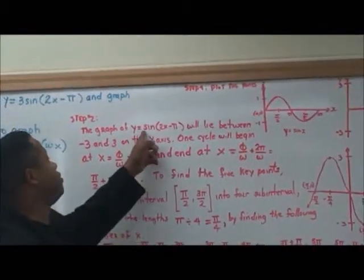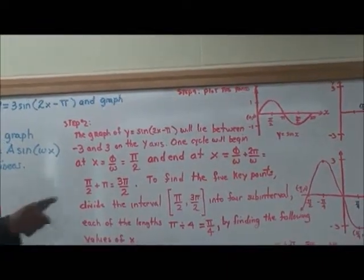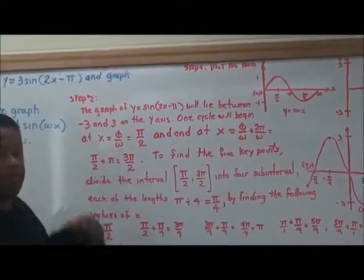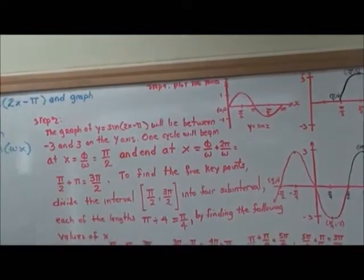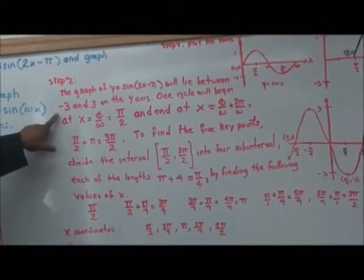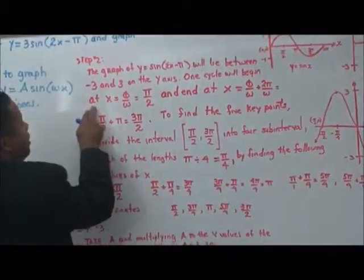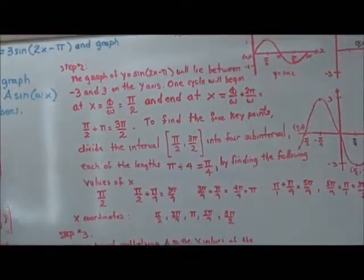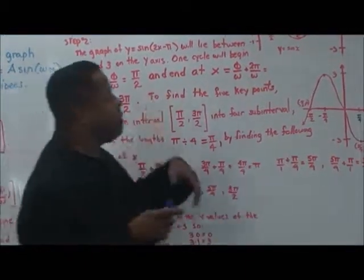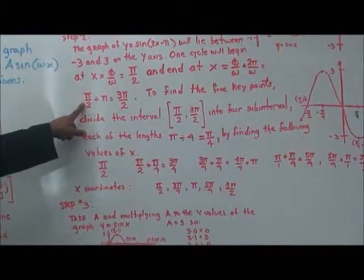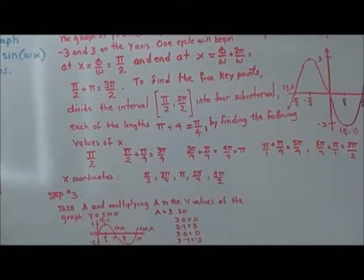Step two: the graph of y equals 3·sine(2x minus π) will lie between negative 3 and positive 3 on the y-axis. One cycle begins at the phase shift, π/2, and ends at the phase shift plus the period: π/2 plus π equals 3π/2.